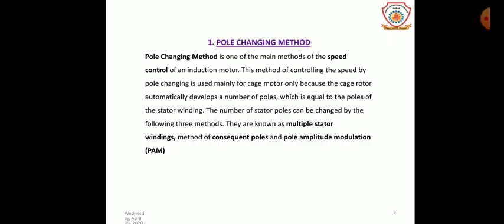The pole changing method is one of the main methods of speed control of an induction motor. This method of controlling speed by pole changing is used mainly for cage motors only, because the cage rotor automatically develops a number of poles. Continuous smooth speed control is not possible by this method.